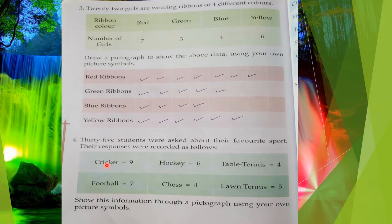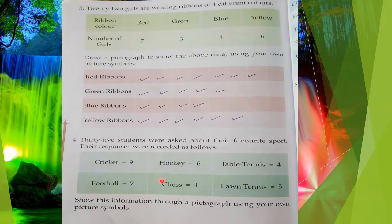How many students like cricket? Nine students. Nine students' favorite game is cricket. How many students' favorite game is hockey? Six. How many students' favorite game is table tennis? Four. How many students' favorite game is football? Seven. How many students' favorite game is chess? Four.